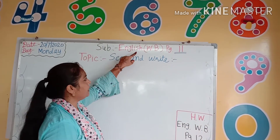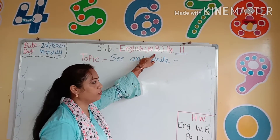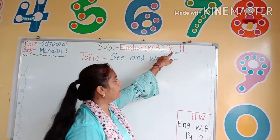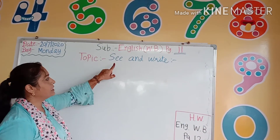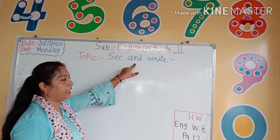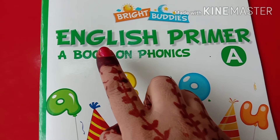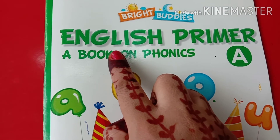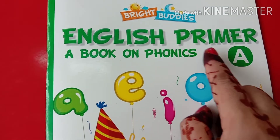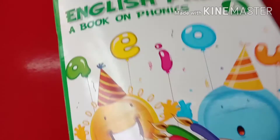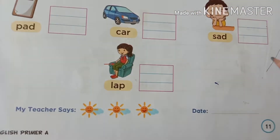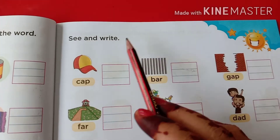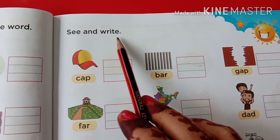And our today's subject is in English word. Book page number 11. And our topic is see and write. So kids, now take this book English Primer A and open the page number 11. See and write.